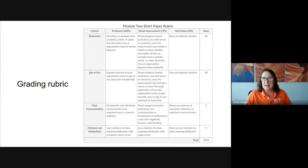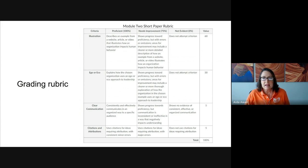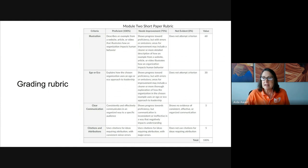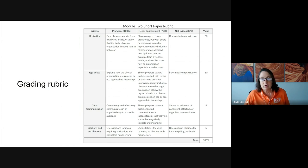Let's take a look at the grading rubric that we will use to assess your short paper submission. I want to go through each of the rows — this will give you a good idea of what I'll be looking for. The top row is illustration: I'm going to look for how you describe the organization you chose, how you made the case for the impacts the organization has on human behavior, and whether you provided examples of how the organization encourages certain behaviors and discourages others. The next row is ego or eco: did your explanation of how the organization uses an ego or eco approach to leadership include examples of behavior that support the approach?